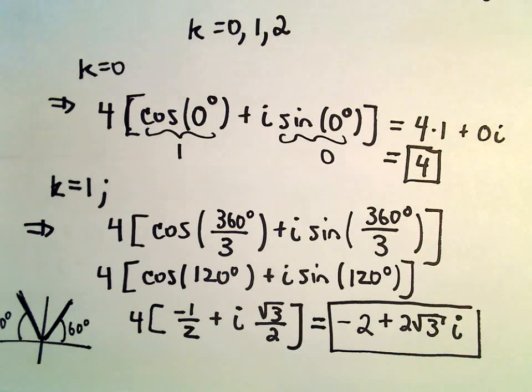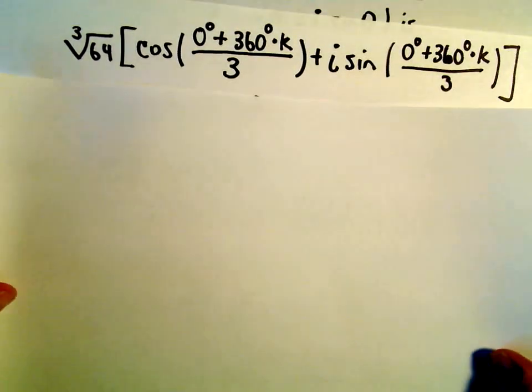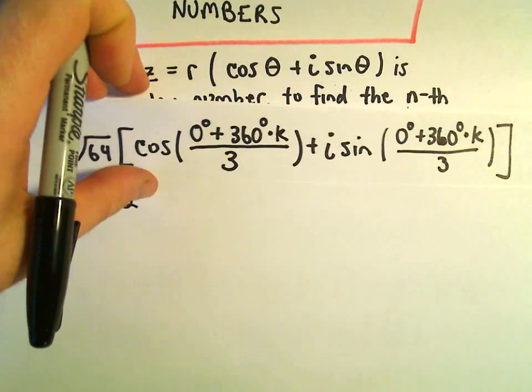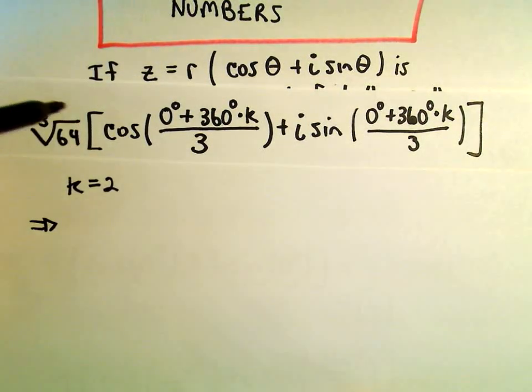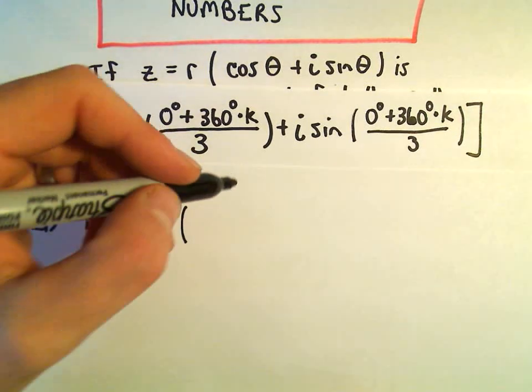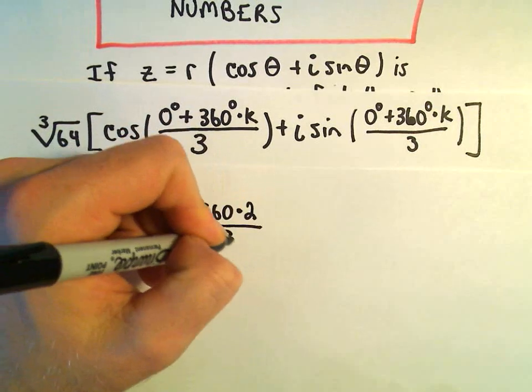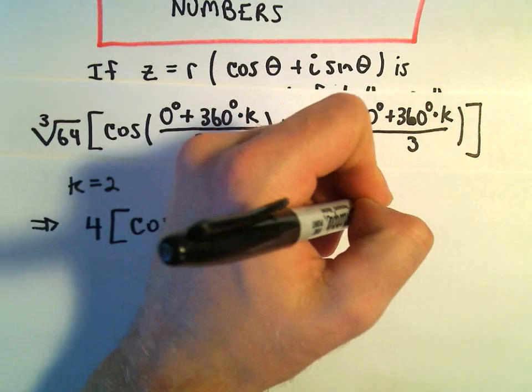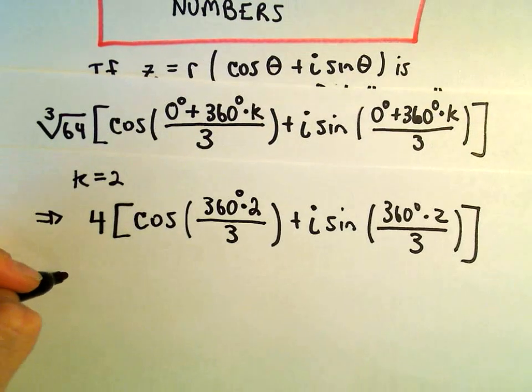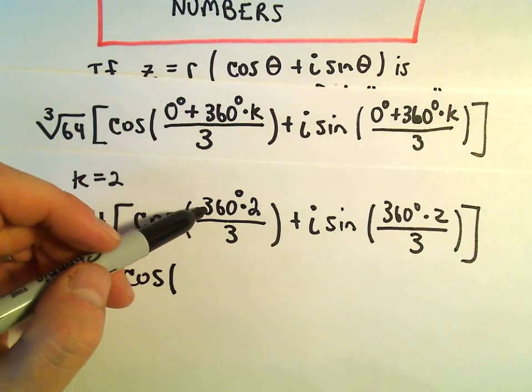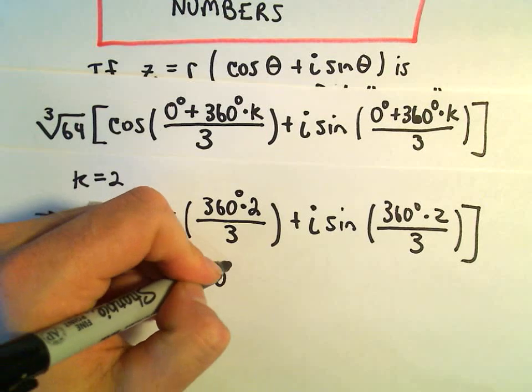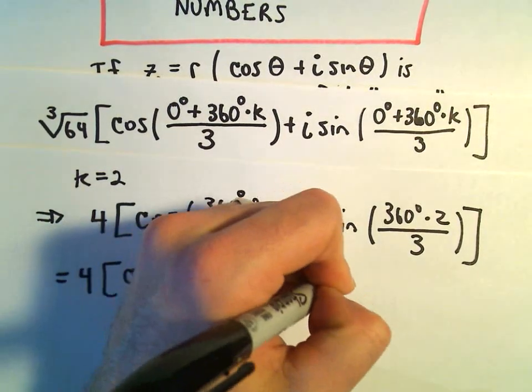So one last time, we'll have to just use our formula just one more time. Now plugging in k equals 2. So if we plug in k equals 2, we're still just going to get... So when we plug in k equals 2 into our formula, we still get the cube root of 64, which is 4. We'll get cosine of 0 degrees, 360 times 2, over 3, plus i sine of 360 times 2 over 3. Well, we said that 360 over 3, that was going to be 120. 120 times 2 would give us 240 degrees, plus i sine of the same thing, 240 degrees.